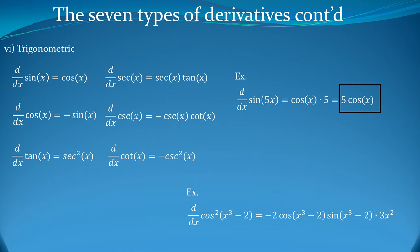For another example, the derivative of cos²(x³ − 2) equals negative 2·cos(x³ − 2)·sin(x³ − 2)·3x². As you can notice, we first apply the power rule, moving the 2 down. It's negative because the derivative of cosine is negative sine. So we have negative 2 in front, times the inside stays the same in the cosine, times the derivative which gives sine with the inside the same, times the chain — the derivative of the inside — which is 3x². That is our final answer.